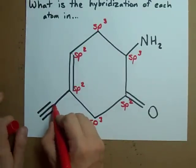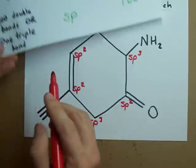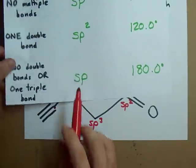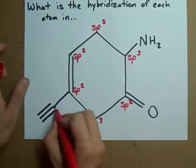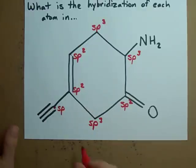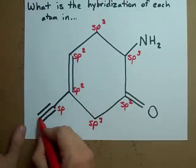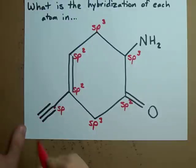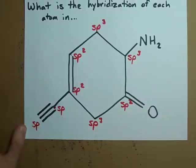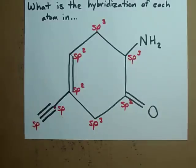This carbon here has one triple bond attached to it — it must be sp hybridized. And this carbon atom here also has a triple bond attached to it, so it must also be sp hybridized.